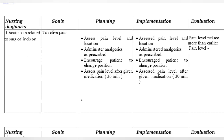Nursing diagnosis 1: Acute pain related to surgical incision. Goal: To relieve pain. Planning: Assess pain level and location. Administer analgesics as prescribed. Encourage patient to change position. Assess pain level after medication is given.